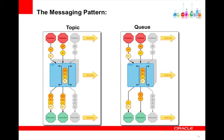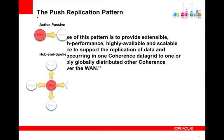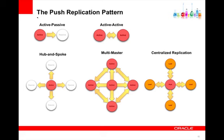The messaging pattern provides support for both queues and topics. The push replication pattern provides an extensible, flexible framework for replicating and synchronizing data from one cluster to another. As the name suggests, data is pushed from the site where it's updated out to whatever other sites are configured. There's a plethora of deployment topologies available, starting with the simplest, active-passive, where there's one site actively publishing to another. Common use cases for active-passive include disaster recovery and keeping a cluster hot and warm, ready to go, in case there's a need to bring a data center down.